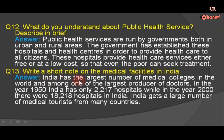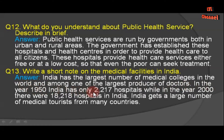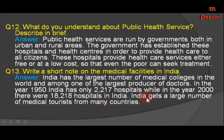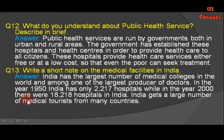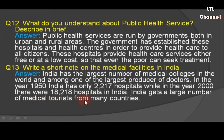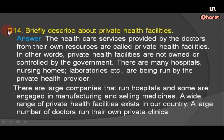Question number thirteen: Write a short note on the medical facilities in India. Answer: India has the largest number of medical colleges in the world and is among one of the largest producers of doctors. In the year 1950, India had only 2,217 hospitals, while in the year 2000 there were 18,218 hospitals. India gets a large number of medical tourists from many countries.